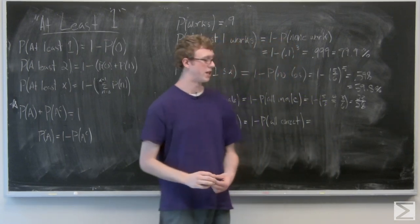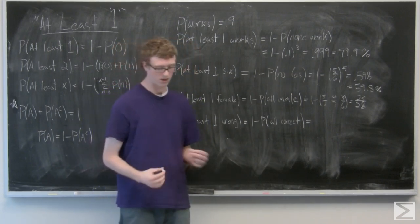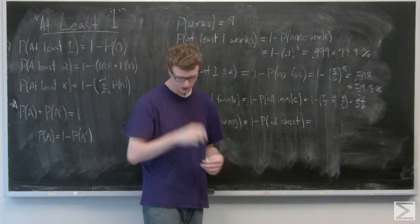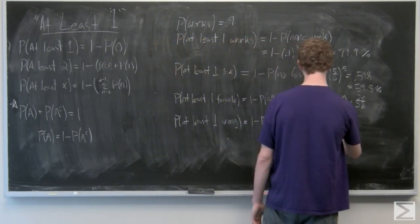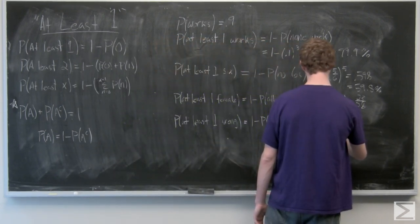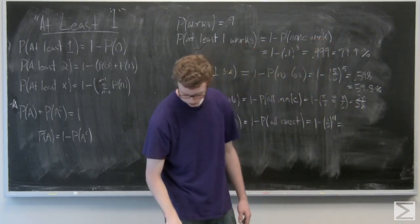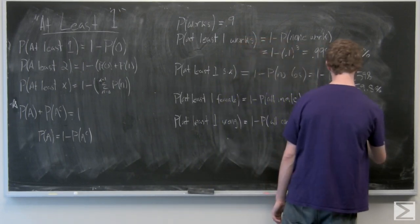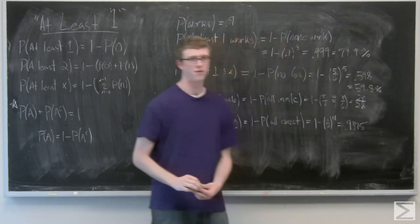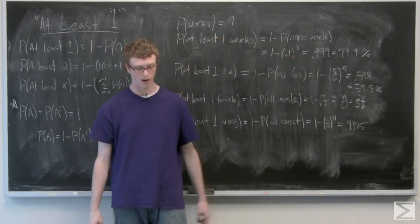The student has a one half chance on each question. And each question is independent because they just guess on every question. So it's one minus one half to the fourth. And that's going to equal 0.9375. So the student has a 0.9375 or 93.75 percent chance at getting at least one problem wrong.